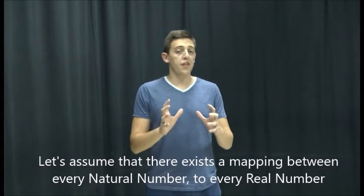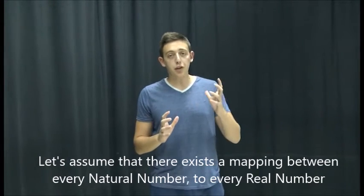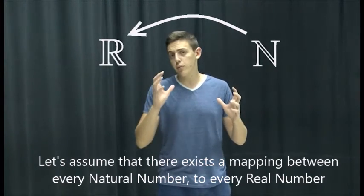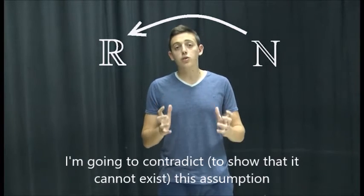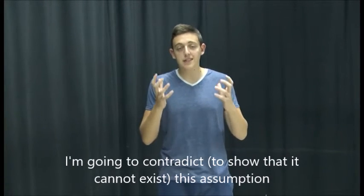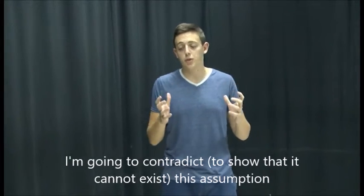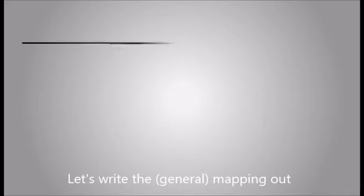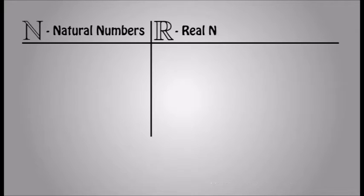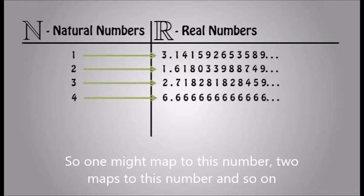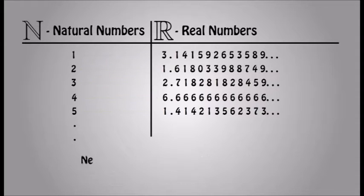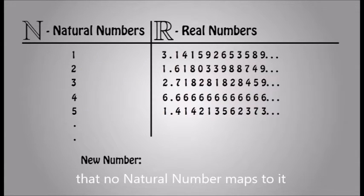Let's assume that there exists a mapping between every natural number to every real number. I am going to contradict, I am going to show that this cannot happen, this assumption. It cannot exist. Let's write the mapping out. So one might map to this number, two maps to this number, and so on. Now we are going to create a new number that no natural number matched to it.